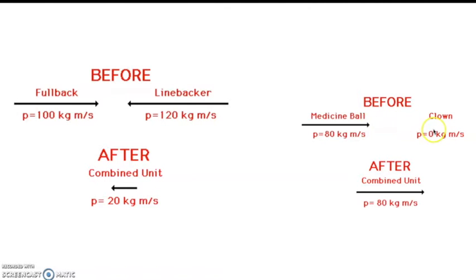Medicine ball and the clown. So the clown is standing still. The medicine ball is thrown to the clown. The clown catches it. Medicine ball has a momentum of 80. The clown is zero. When the medicine ball hits the clown, they both have a momentum of 80, and momentum is conserved.